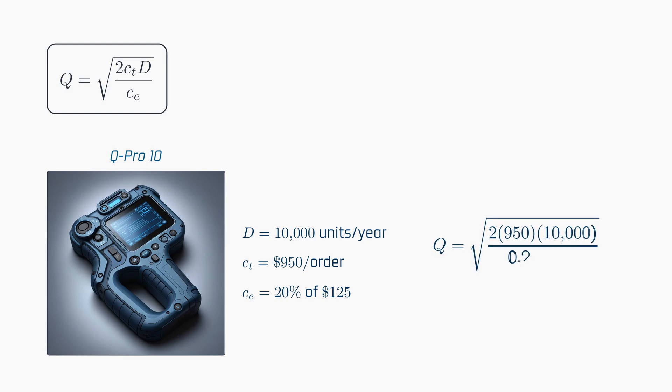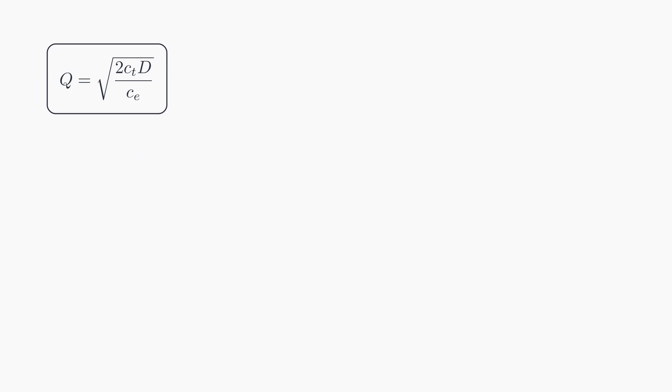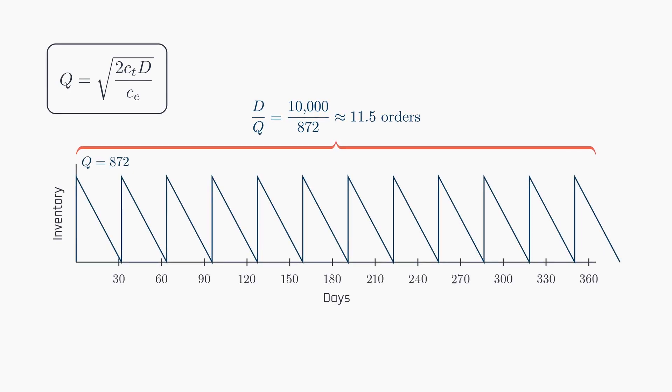Given these parameters, the optimal order quantity is approximately 872 units. This results in about 11.5 orders per year. With a consumption rate of 10,000 units per year, the time required to consume the EOQ is approximately 0.0872 years, or about 32 days.